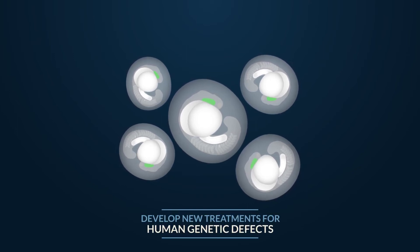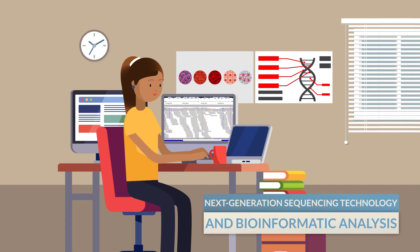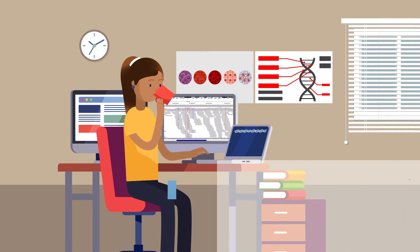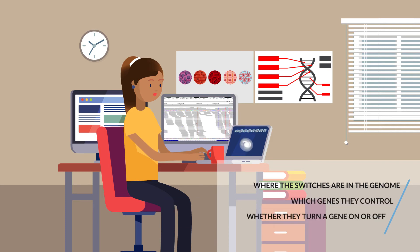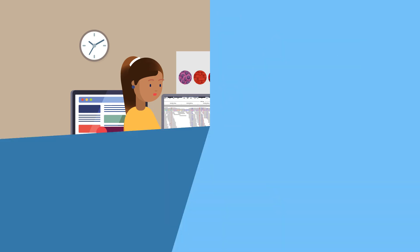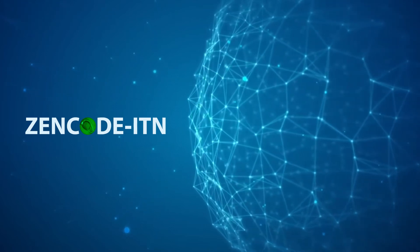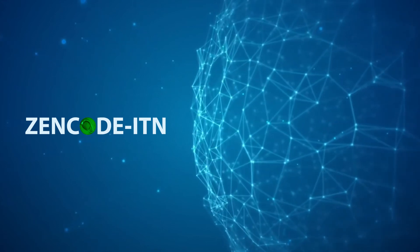These methods give us a way to understand the function of genes and their switches and to develop new treatments for human genetic defects. To study how genes and switches are controlled, we can also use techniques called next-generation sequencing technology and bioinformatic analysis, collectively known as genomics. This allows us to determine where the switches are in the genome, which genes they control, whether they turn a gene on or off, and when, during development, the switch is active. We at the ZENCODE ITN are using these advanced genomics techniques to discover how gene function is controlled during zebrafish development in order to better understand human development.